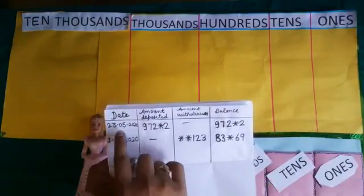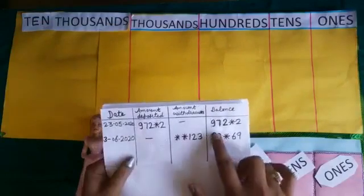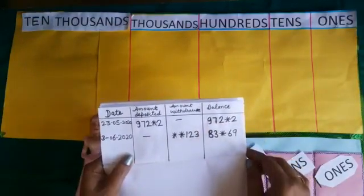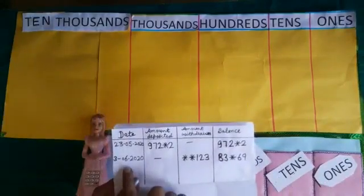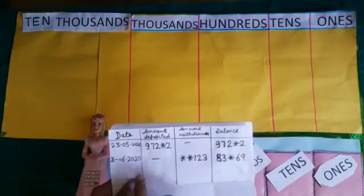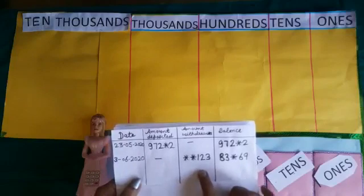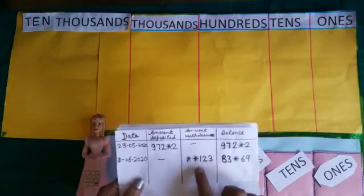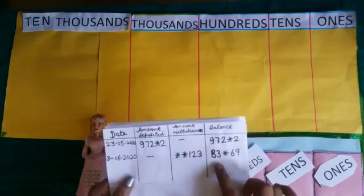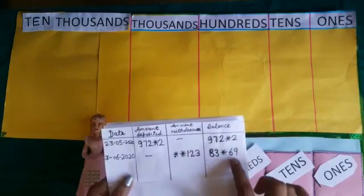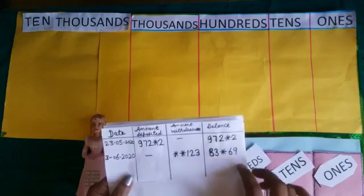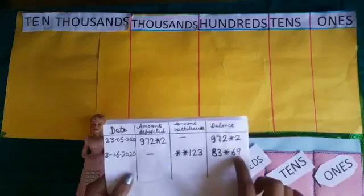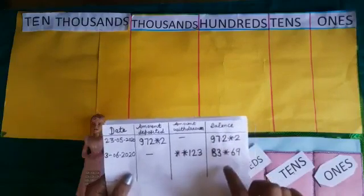On May 23rd, 2020, there were 97,200 and some rupees in Sambeet's account. On June 3rd, 2020, her father had withdrawn some amount which is not clear. We can see only Rs.123 and now Rs.83,069 are there in her account. By taking these two amounts, we will try to find out these missing digits.